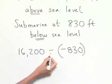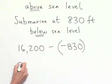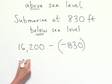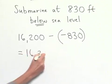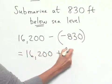Now we know that to subtract a negative value is equivalent to adding the positive value, so I'm going to rewrite this as 16,200 plus 830.